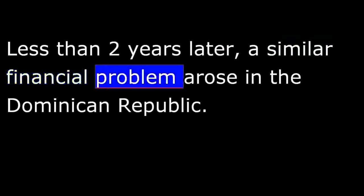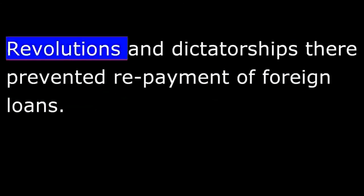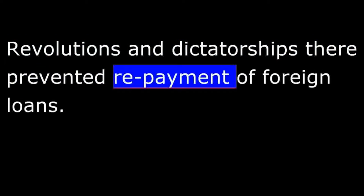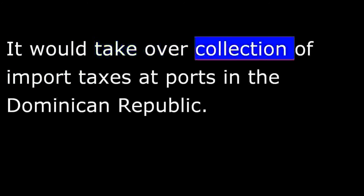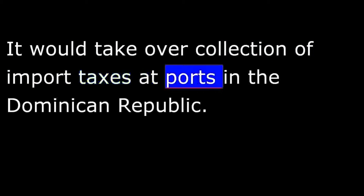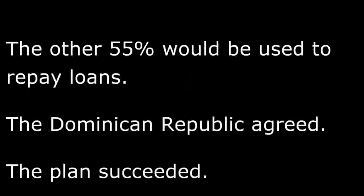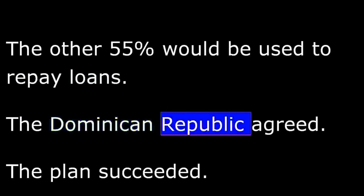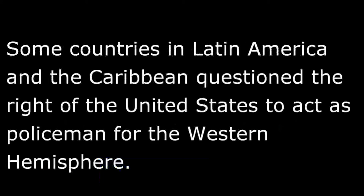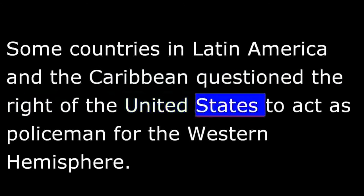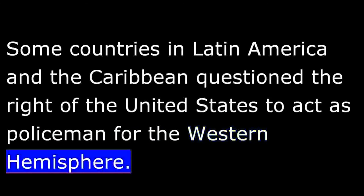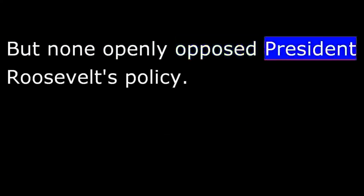Less than two years later, a similar financial problem arose in the Dominican Republic. Revolutions and dictatorships there prevented repayment of foreign loans. The United States offered a solution: it would take over collection of import taxes at ports in the Dominican Republic. Forty-five percent of the money would be paid to the Dominican government, and the other 55 percent would be used to repay loans. The Dominican Republic agreed and the plan succeeded. Some countries in Latin America and the Caribbean questioned the right of the United States to act as policemen for the Western Hemisphere, but none openly opposed President Roosevelt's policy.